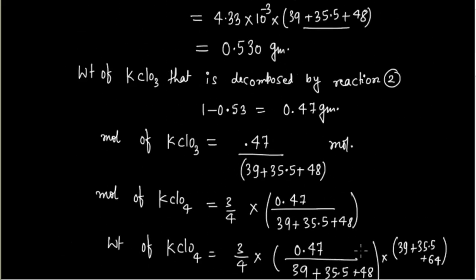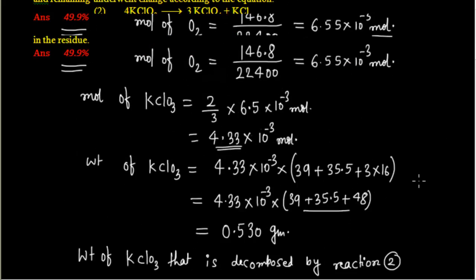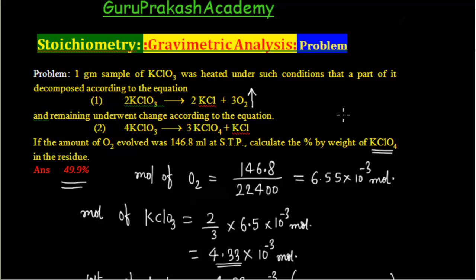The key idea in this problem is: first calculate the mass of KClO₃ used in reaction 1 from the O₂ data, then find the mass of KClO₃ used in reaction 2 by subtraction, and then easily solve the rest of the problem.